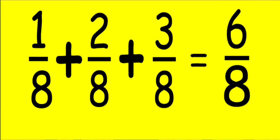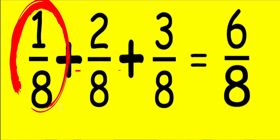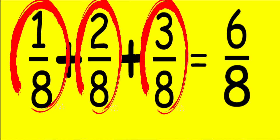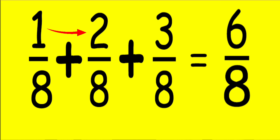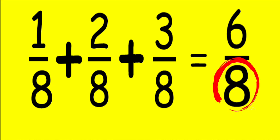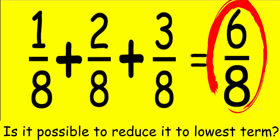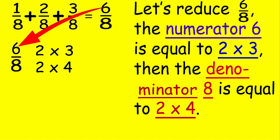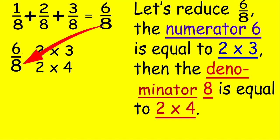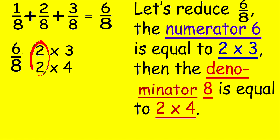For example, 1/8 plus 2/8 plus 3/8. We add the numerators: 1 plus 2 plus 3 is equal to 6. Then, copy the denominator 8. So, the answer is 6/8. Is it possible to reduce it to lowest term? Yes. Let's reduce 6/8. The numerator 6 is equal to 2 times 3. The denominator 8 is equal to 2 times 4. Since 2 are the same, let's cancel them. So, the answer is 3/4.